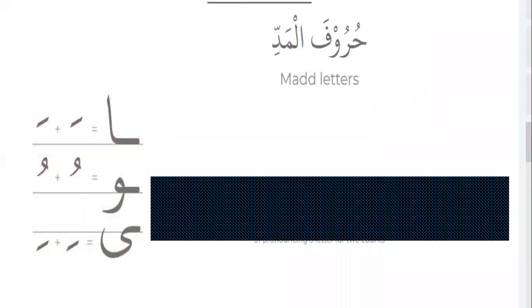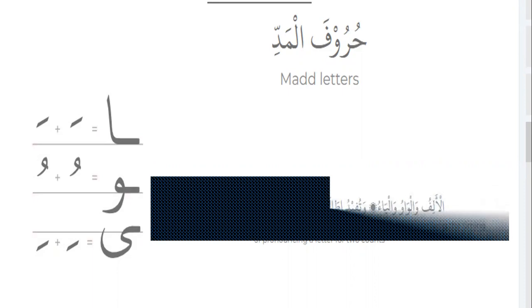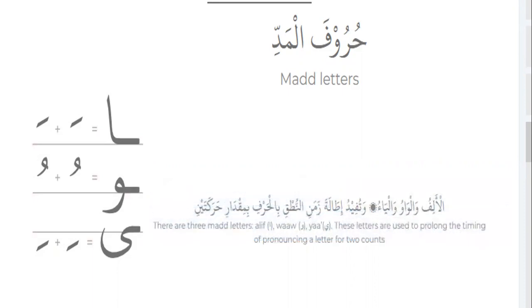Mad with alif, mad with waw, and mad with ya. Mad with alif means double fatha. Mad with waw means double dommah. Mad with ya means double kasrah. There are three mad letters: alif, waw, ya. These letters are used to prolong the timing of pronouncing a letter for two counts.